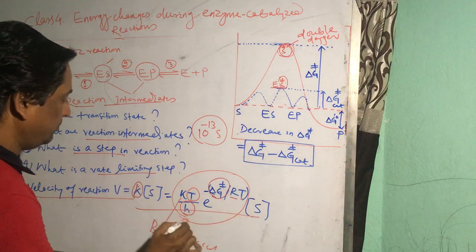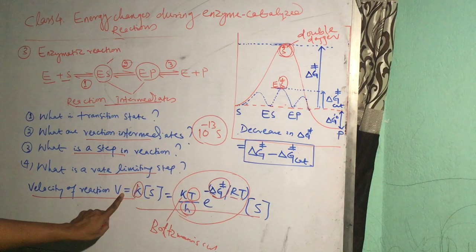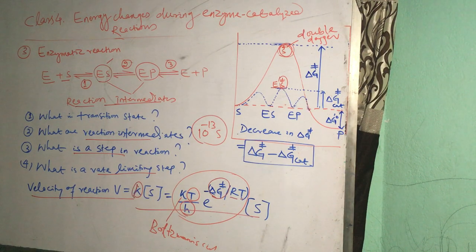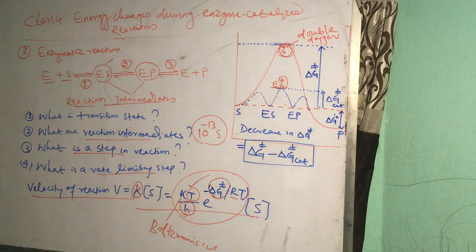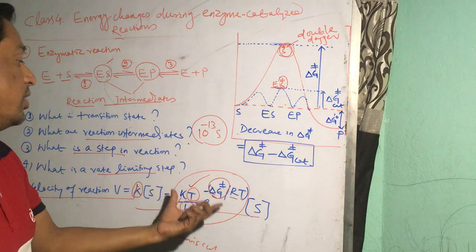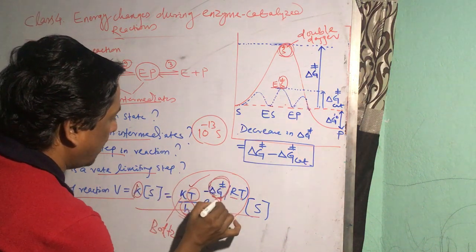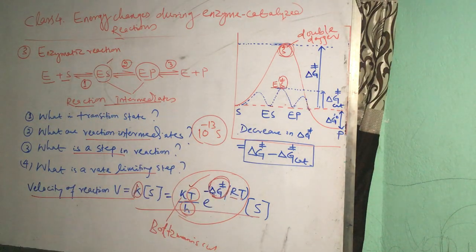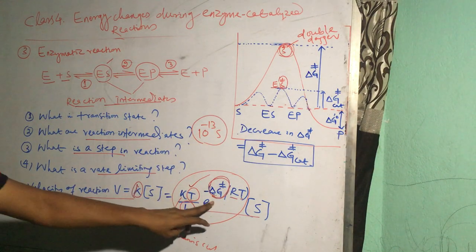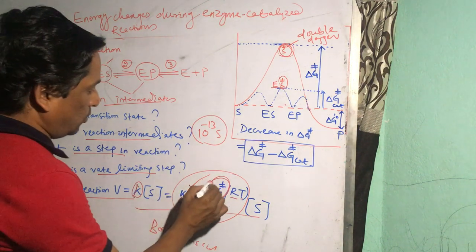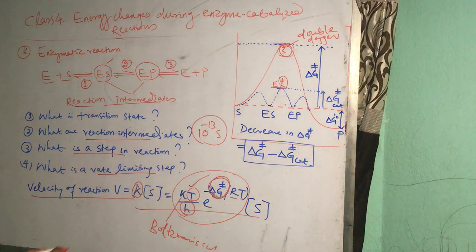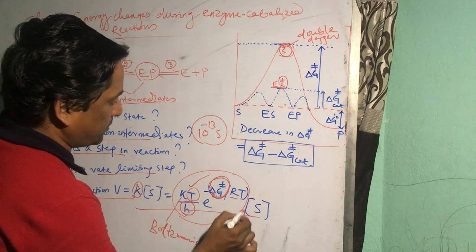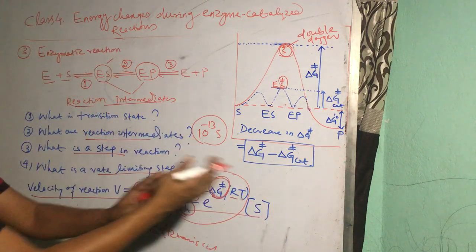So here it may be noted that the velocity of the reaction is dependent on three important factors. T is the absolute temperature—if temperature is increased, the velocity of the reaction is going to increase. Then this activation energy. As they are exponentially related, this velocity and activation energy, lower this energy, more is the velocity. And this substrate—more is the substrate concentration, more is the velocity.